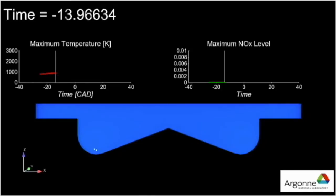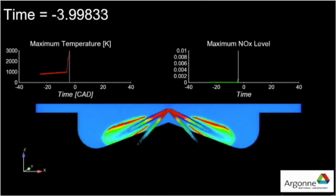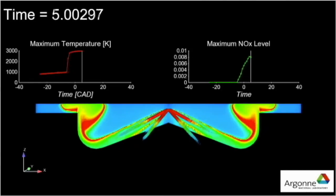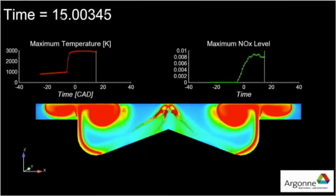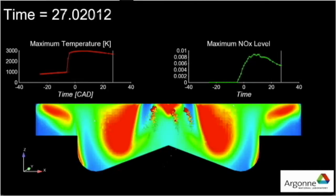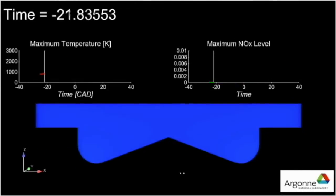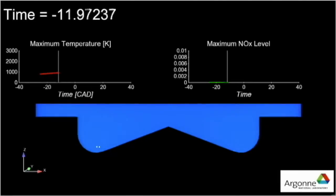This video shows what we believe is the largest diesel engine combustion simulation ever performed. The 50 million peak cell count simulation was performed on the high performance computing clusters at Argonne National Laboratory using 512 computational cores for a wall clock time of more than two weeks.